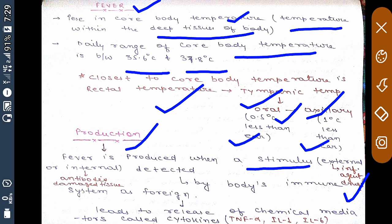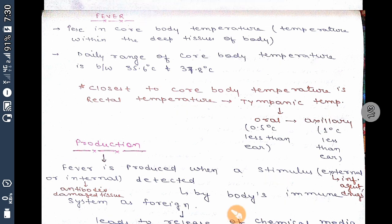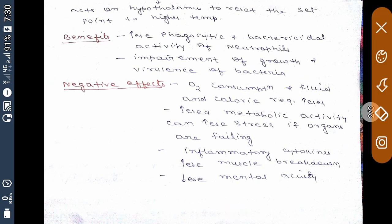When detected by the body's immune system as a foreign agent, it leads to release of certain chemical mediators called cytokines: TNF-alpha (tumor necrosis factor alpha), interleukin-1, and interleukin-6. These cytokines act on the hypothalamus to reset the set point to a higher temperature. This is the basic cause of fever.